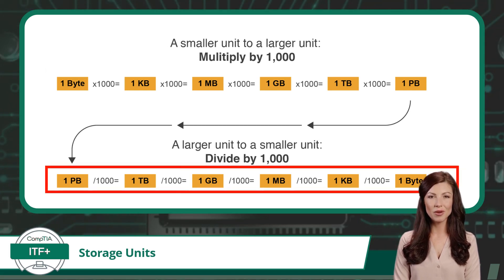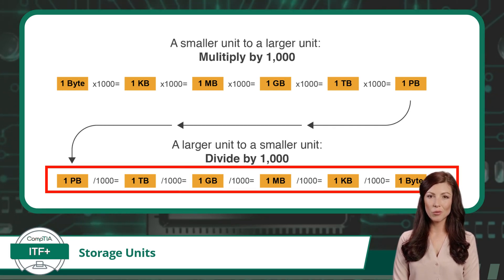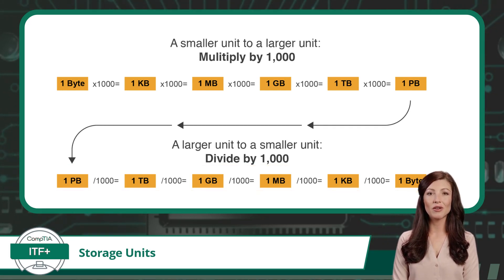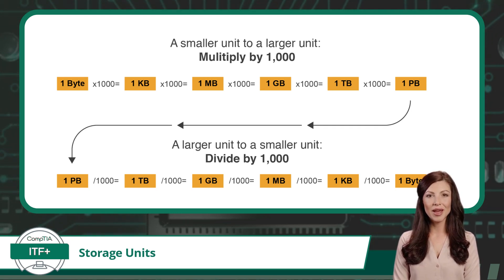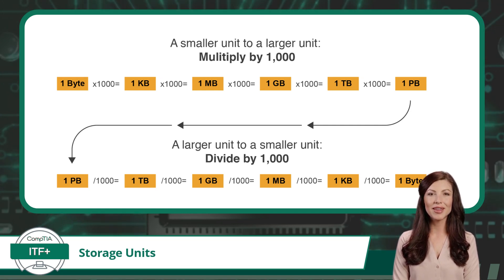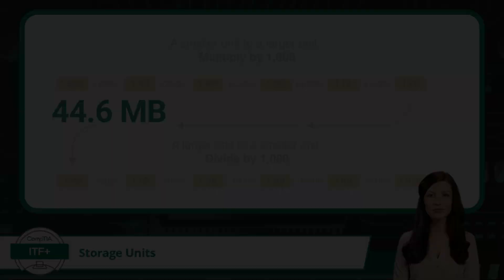And from largest to smallest: petabyte, terabyte, gigabyte, megabyte, kilobyte, and back to a single byte. You should also know that moving from any storage unit to the next closest measure is always a factor of 1000. For example: one kilobyte is 1000 bytes, one megabyte is 1000 kilobytes, one gigabyte is 1000 megabytes, one terabyte is 1000 gigabytes, and so on. Understanding these relationships will assist in converting between units when needed.